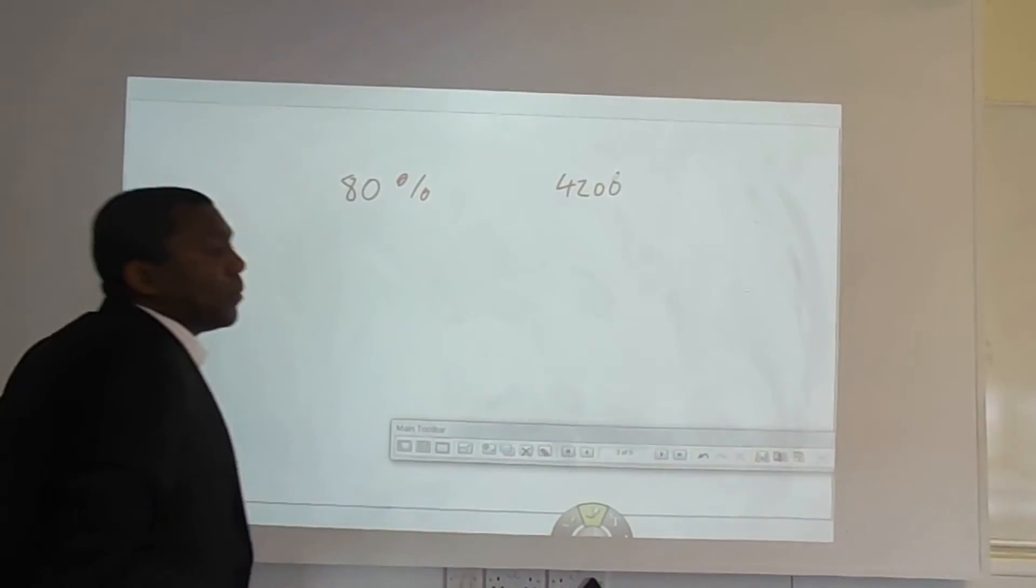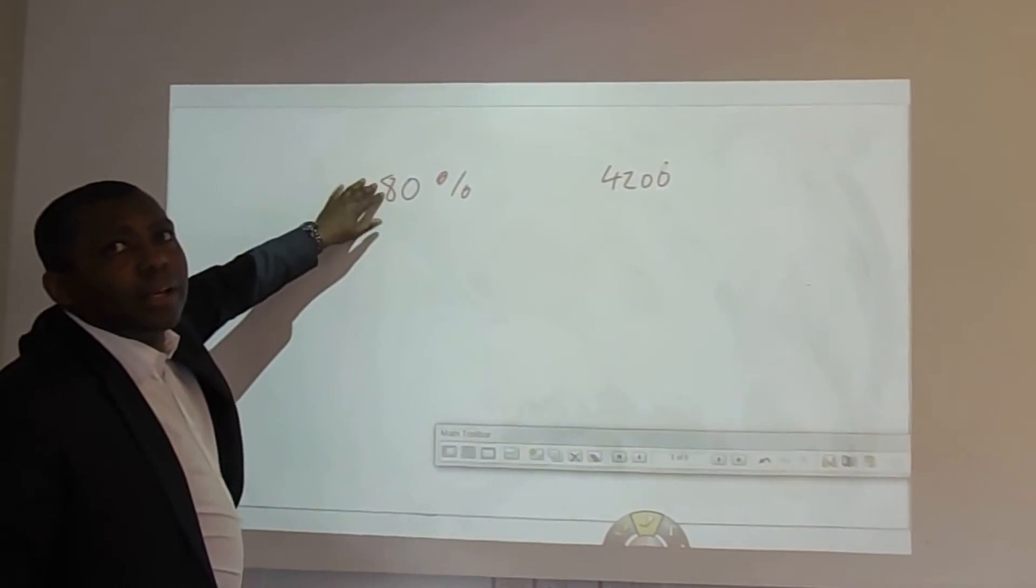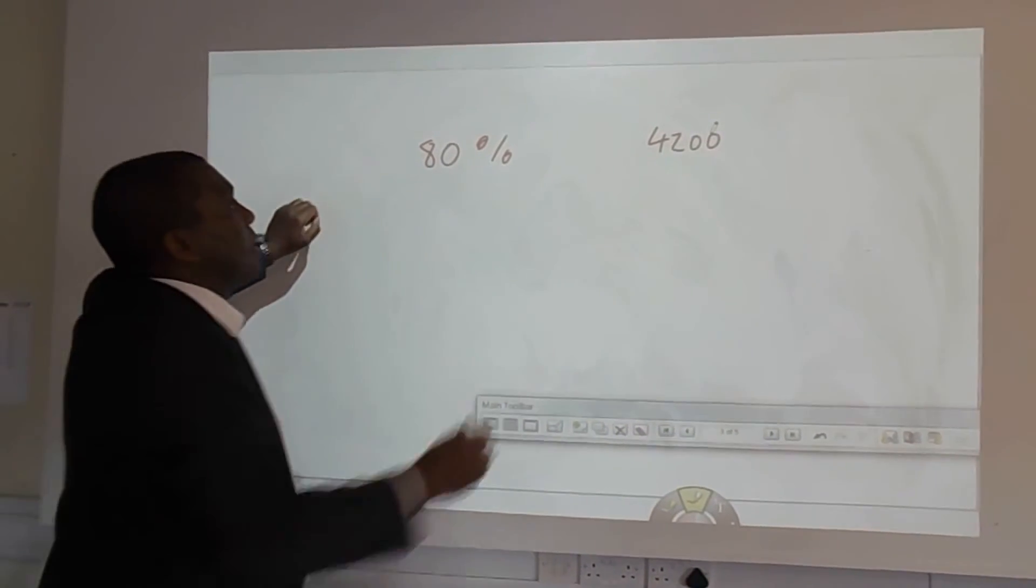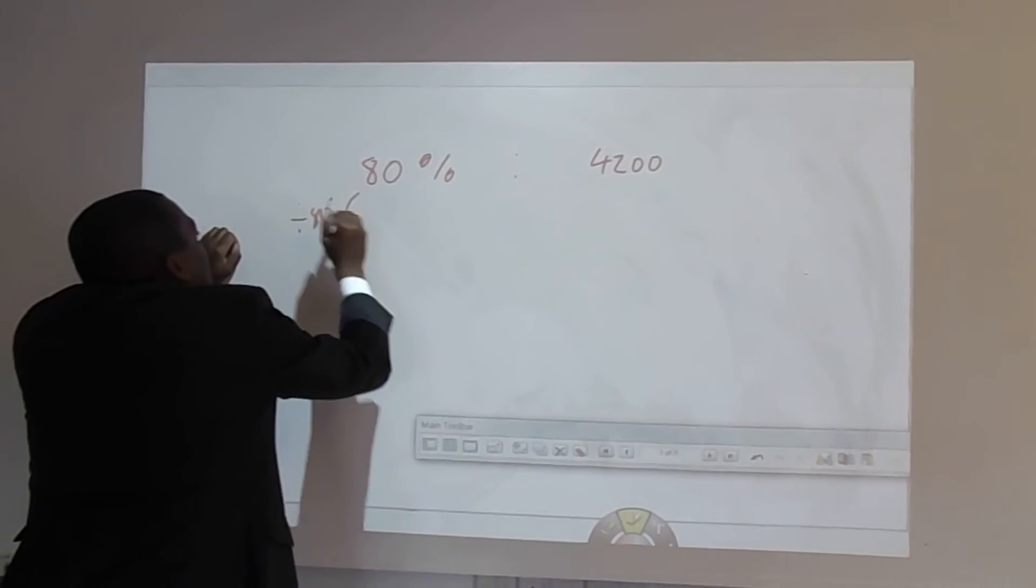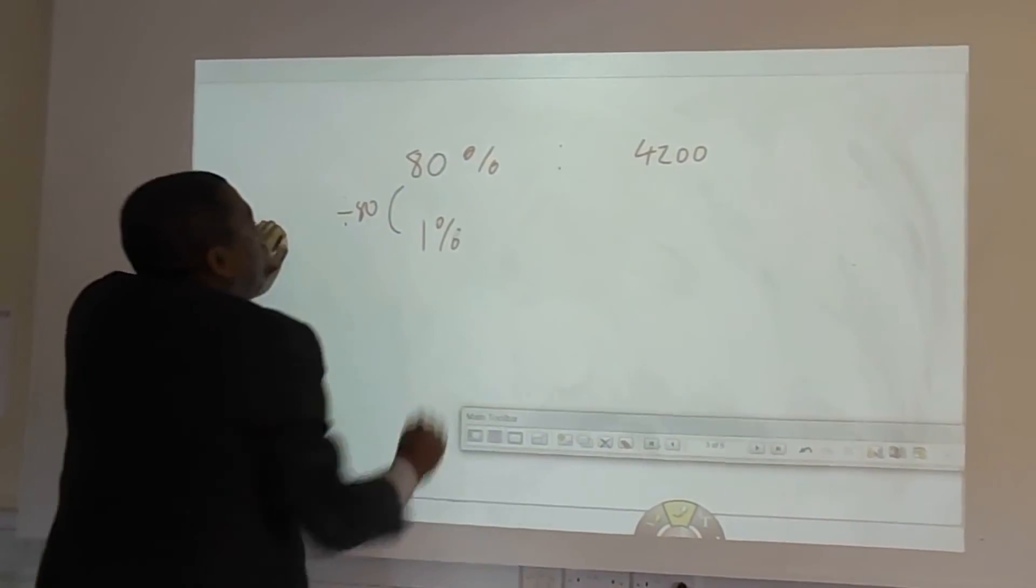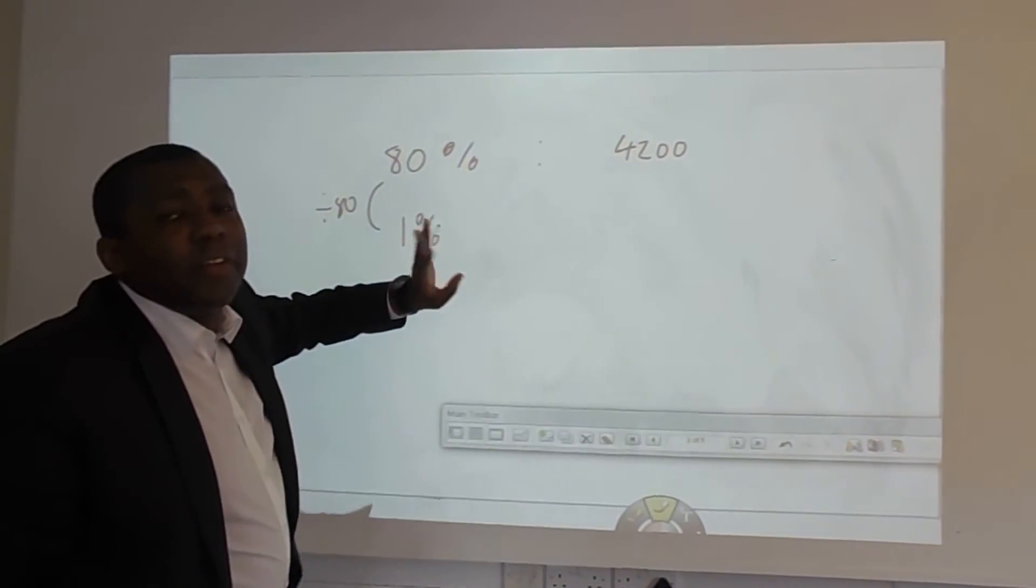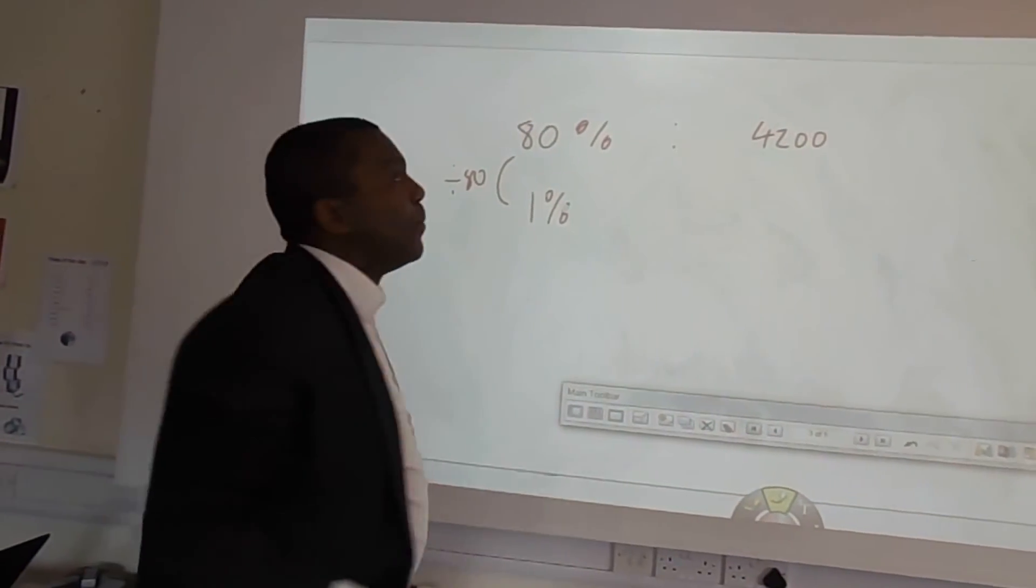Work out 1%. To work out 1%, I'll divide that side by 80. That gives you 1%. And whatever you do to one side, you do to the other side. Very common principle in maths.